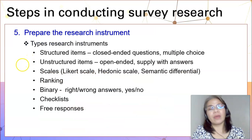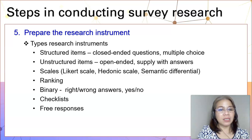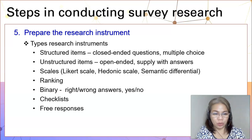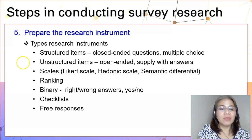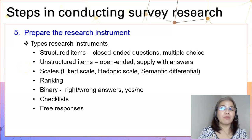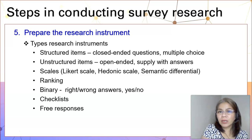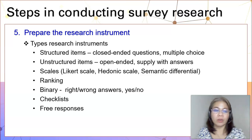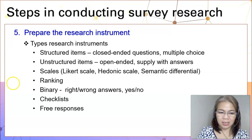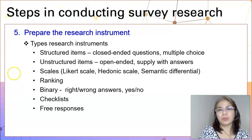There are different research instruments in survey research. It can be a structured item such as closed-ended questions or multiple-choice questions. It can be unstructured like open-ended questions where respondents supply their own answers. It can be in the form of scales like Likert scale, hedonic scale, or semantic differential. Or it can be based on rank — most important, lesser important, not so important; or first, second, third. Or it can be binary: right or wrong, yes or no, true or false. Or it can be a checklist, or in the form of free response cells.